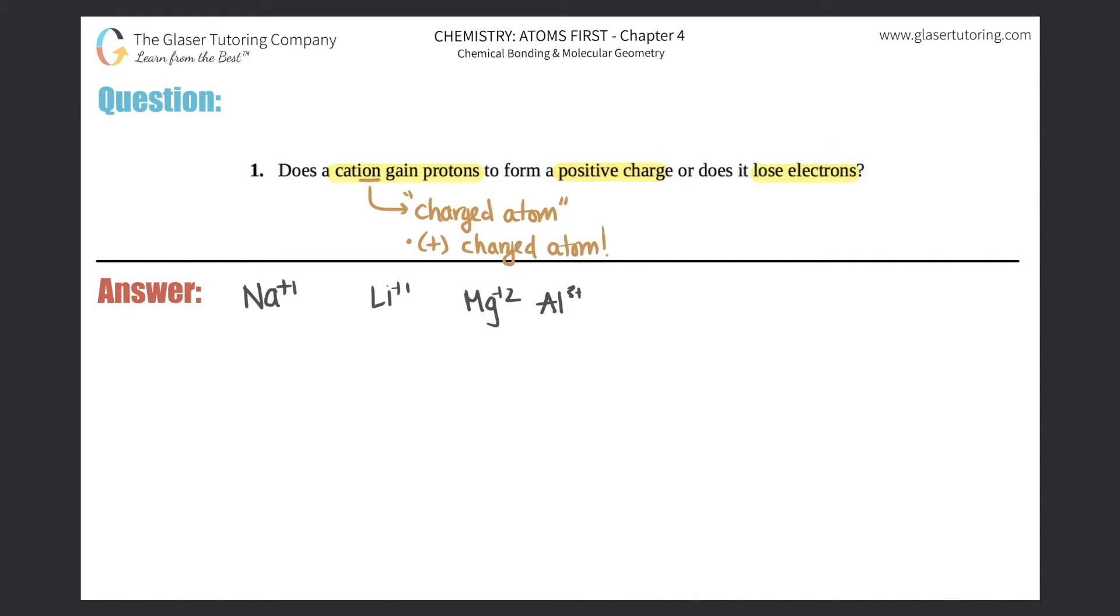All of these would all be classified as cations because they are always a positive charge, and the charge, aka the oxidation state, will always be in the top right-hand corner. So that's standard.